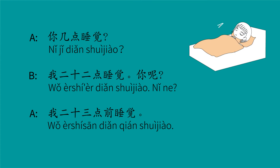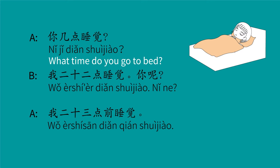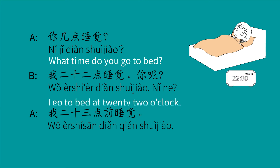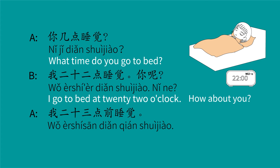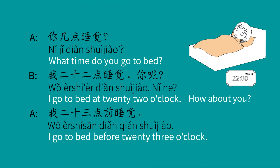睡觉 means to sleep, or go to bed. 你几点睡觉? What time do you go to sleep? 我二十二点睡觉。 前 means before. 二十三点前 means before twenty-three o'clock. 我二十三点前睡觉 — I go to bed before twenty-three o'clock.